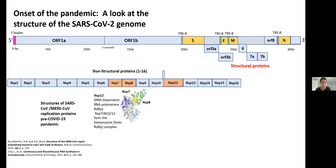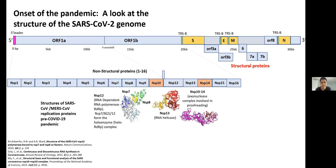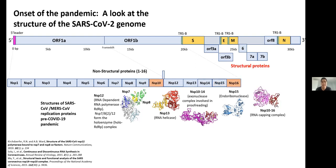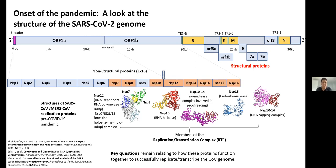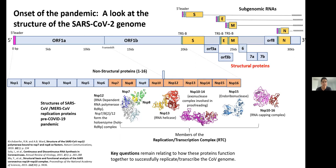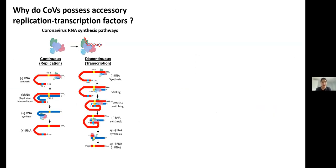The holo-RdRp is thought to coordinate with other accessory factors to achieve functional replication and transcription. Some of these factors include the NSP13 helicase, which is an SF1B RNA helicase; NSP10/14, an exonuclease complex involved in viral proofreading; NSP15, an endoribonuclease; and NSP16, an RNA capping complex. How these different accessory factors function in conjunction with the replication transcription complex is not well understood, and we basically want to see how these factors function together in order to successfully replicate the coronavirus genome.